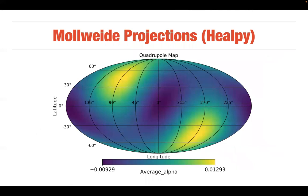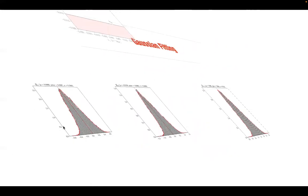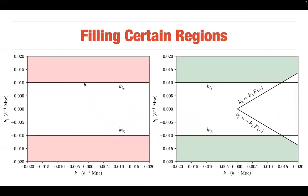Another example is the Mollweide projection, done using Healpy. You can also do Gaussian fitting — fitting histograms with a Gaussian curve, which I've used in my research. You can fill certain regions in a plot and write text on plots, even using LaTeX text directly within Python.